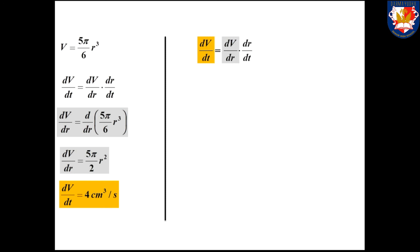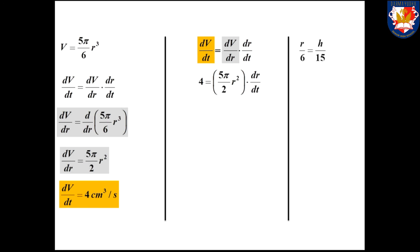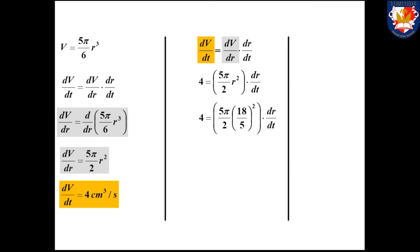Using the chain rule, dV/dt equals dV/dr times dr/dt. Since V = (5π/6)r³, dV/dr equals (5π/2)r². From the question, dV/dt equals 4 cm³ per second. Substituting into the chain rule equation: 4 equals (5π/2)r² times dr/dt. From the similarity relation with h = 9 cm, r = 18/5. Substituting this value of r gives 4 equals (324π/10) times dr/dt, so dr/dt equals 10/(81π).